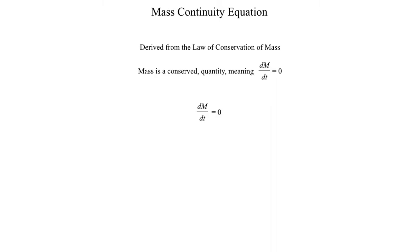So that's our starting point: dm/dt is equal to zero. I'm also going to go ahead and rewrite this so that this is actually a derivative operation — taking the time derivative of mass. Right now this is not something that we can really work with, but we can make a couple of substitutions to actually turn this into something that we can apply in the atmosphere.